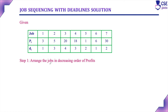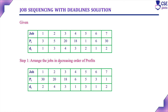Step 1: arrange the jobs in decreasing order of profit. The first job is the one that earns the maximum profit — job number 7 gets first preference. Next is job number 3, then job number 4 with profit 18, then job number 6 with profit 6, then job number 2 with profit 5, then job number 5 with profit 5, and finally job number 1 with profit 1. So we have arranged all jobs in order of decreasing profit.